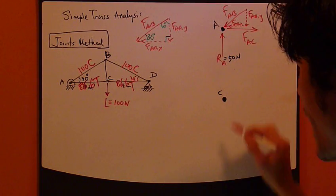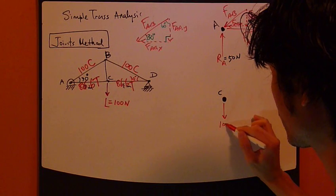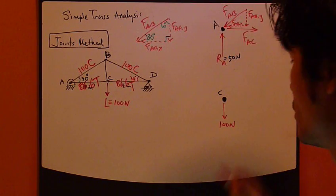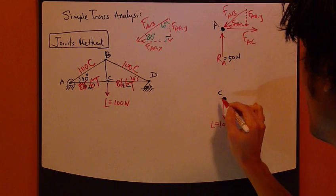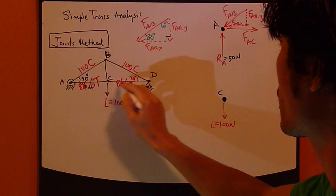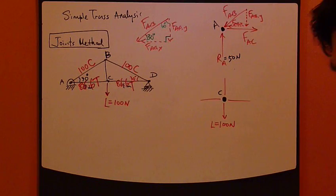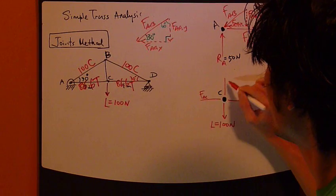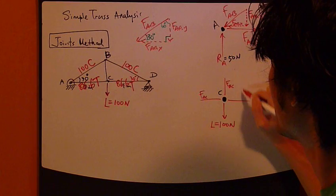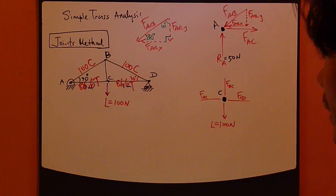And then draw all the forces acting on this joint. So now I have this 100 Newton load, and I have three other forces. So one, two, and three. I'm going to call this FAC, this is FBC, this is FCD.